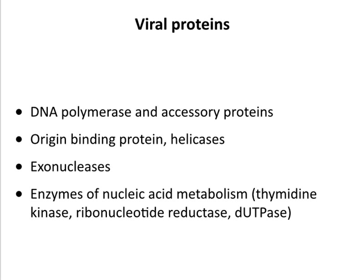Some of the viral proteins you will see include DNA polymerases and accessory proteins, origin binding proteins, helicases that unwind double-stranded DNAs (which must be unwound in order to be copied), exonucleases that chop ends, and various enzymes of nucleic acid metabolism. Remember all the dNTPs have to be made — there are lots of enzymes in the cell that go towards that. For small viruses this is all coded by the cell, but some larger viruses encode enzymes involved in nucleotide metabolism.